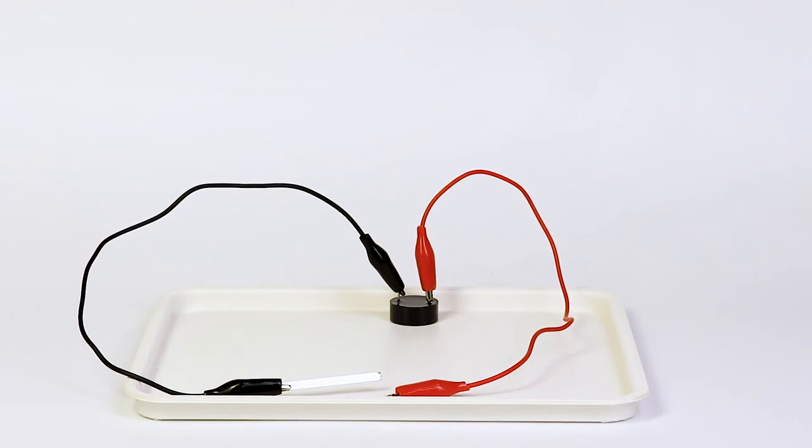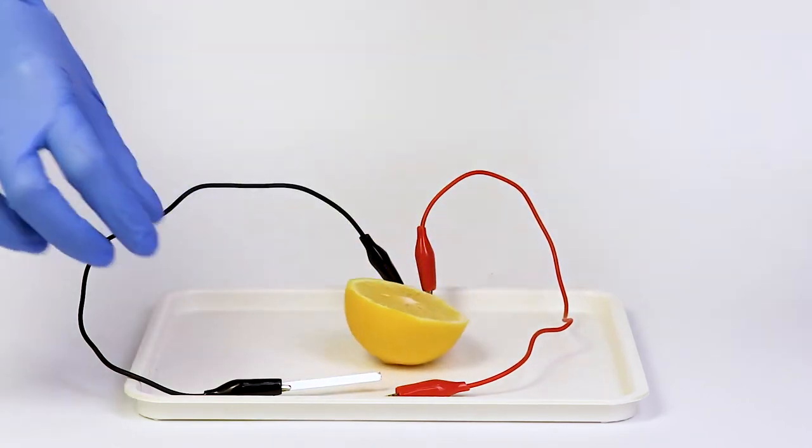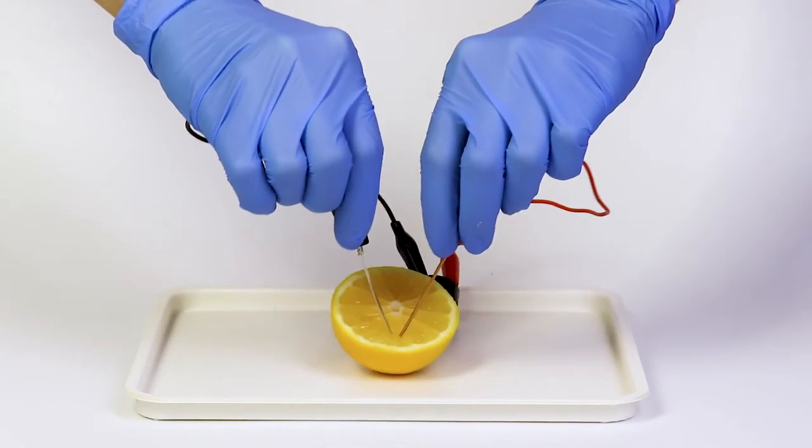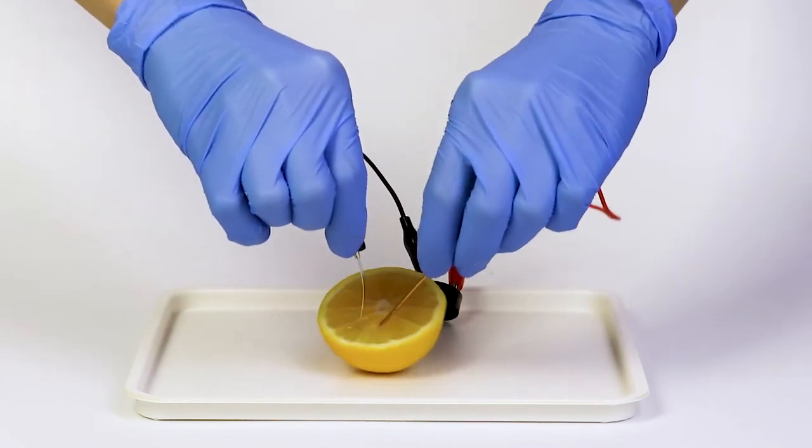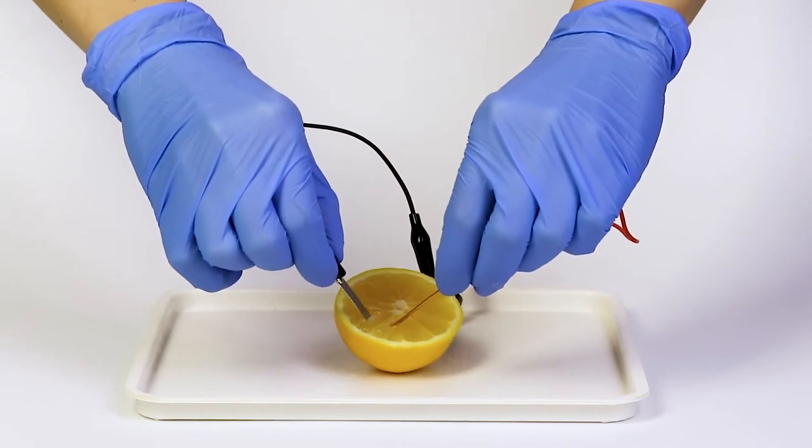Take a half of lemon and insert in it the magnesium plate and the copper rod. Make sure these metals don't touch each other. You'll hear the buzzer sound, which means there is electrical current in the wires.